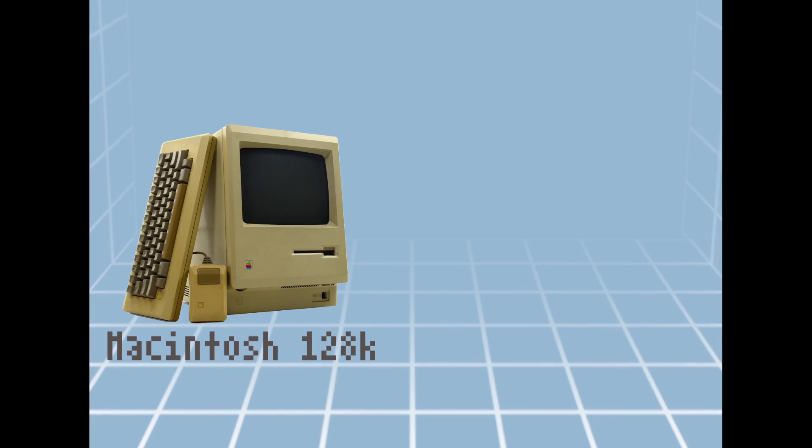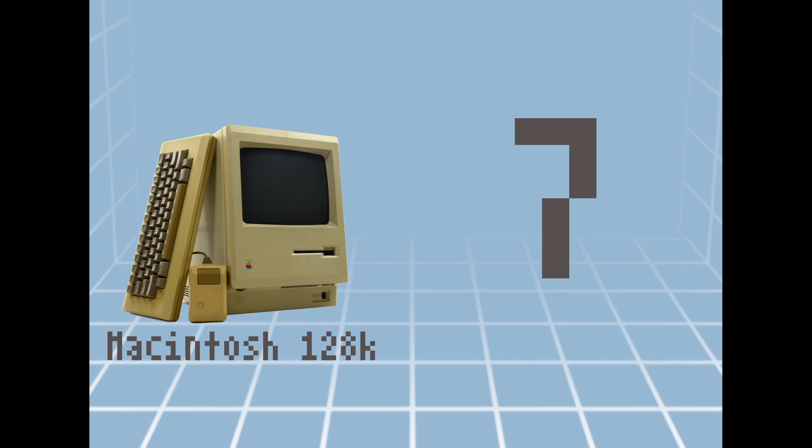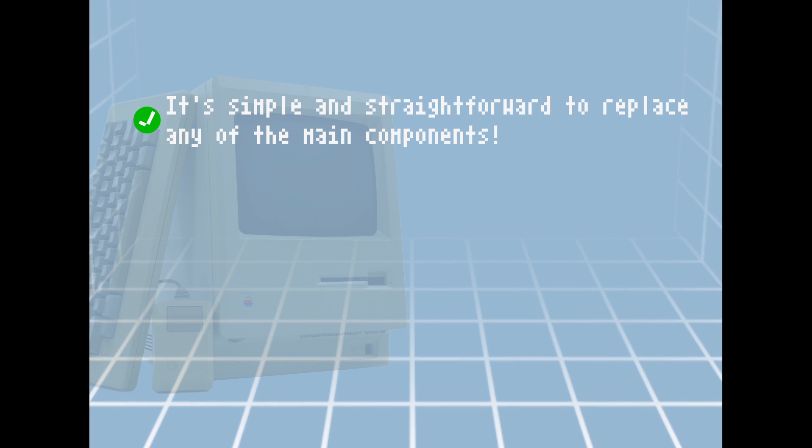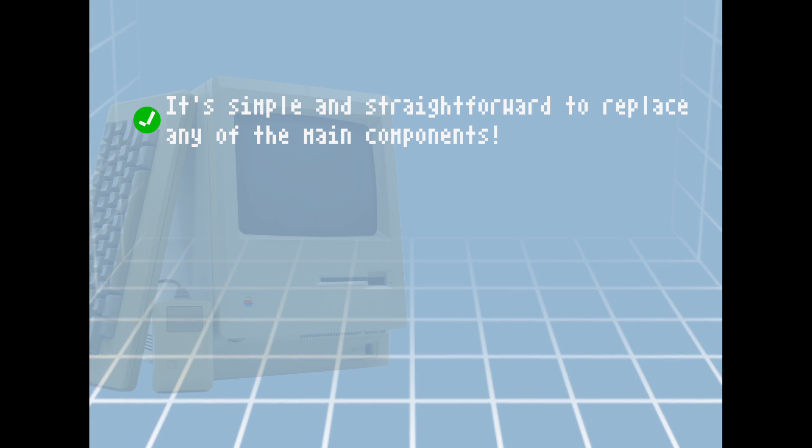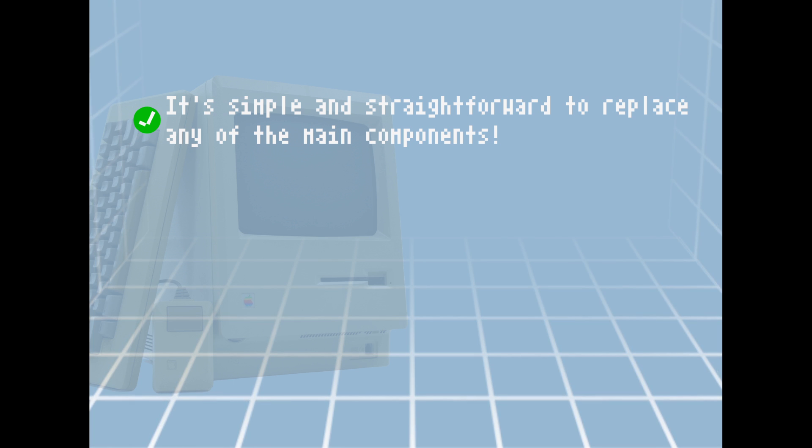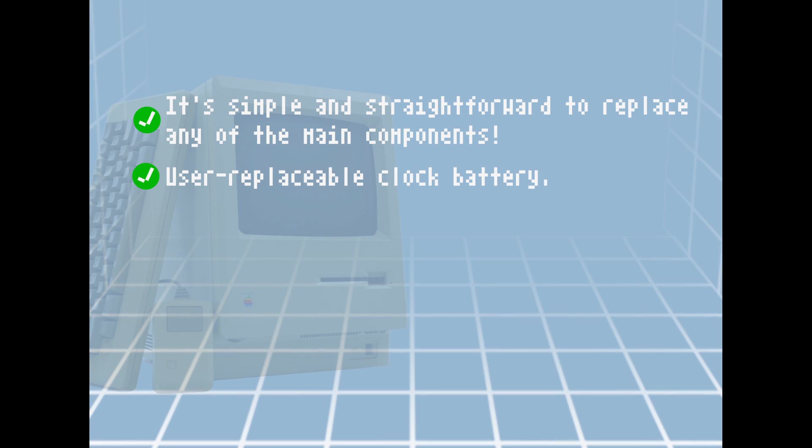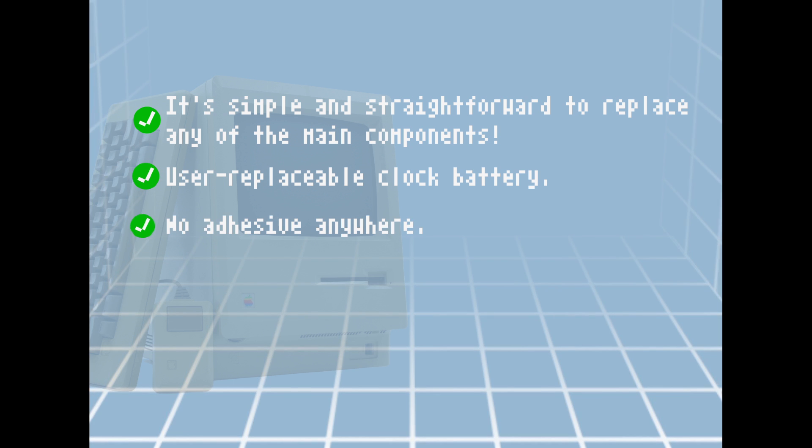The Macintosh 128K got a 7 out of 10 and here's why. On the upside, once you're inside, it's simple and straightforward to replace any of the main components. The floppy drive, power supply, logic board, or CRT display. It also has a user-replaceable clock battery and no adhesive anywhere.